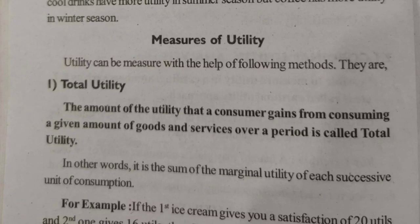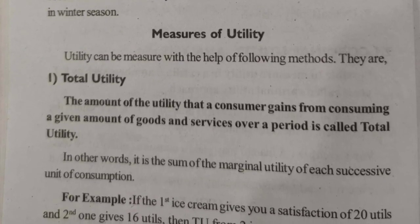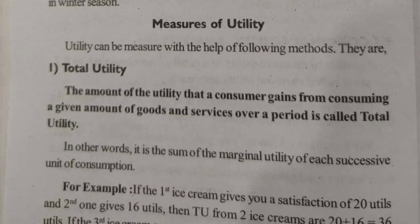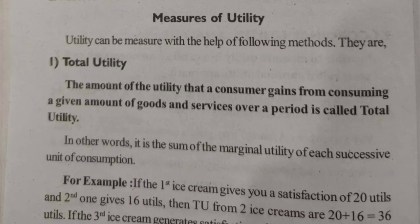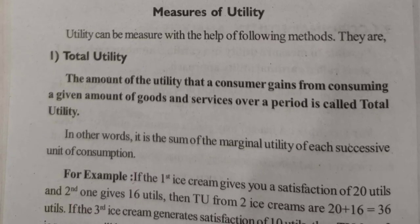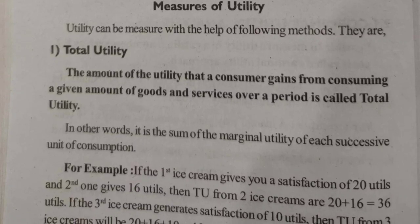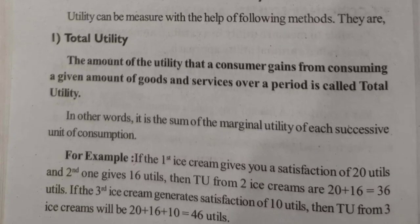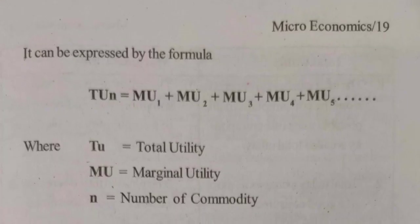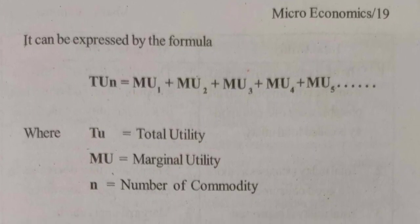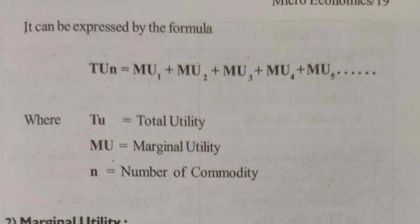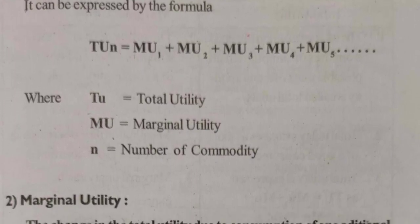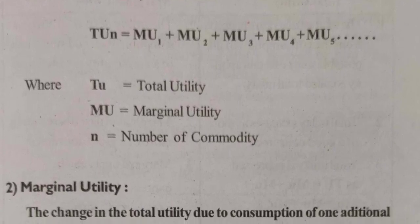Total Utility means the amount of utility that a consumer gains from a given amount of goods or services over a period — that is called Total Utility. For example, eating four apples gives a total satisfaction — that is total utility.